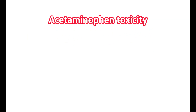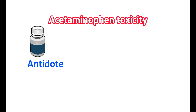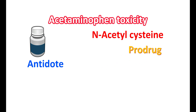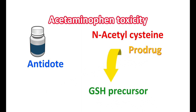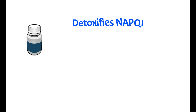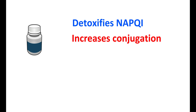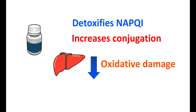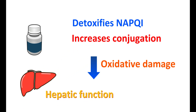Another approach is the administration of an antidote: N-acetylcysteine acts as an antidote for acetaminophen toxicity. It is a prodrug that acts as a glutathione precursor, supplying cysteine to increase conjugation of the toxic metabolite with thiol groups, thereby decreasing NAPQI accumulation. This antidote detoxifies NAPQI, reverses the metabolic process, increases conjugation of acetaminophen, reduces oxidative damage, and improves hepatic function. In this way, acetaminophen-induced liver toxicity can be treated by administration of N-acetylcysteine.